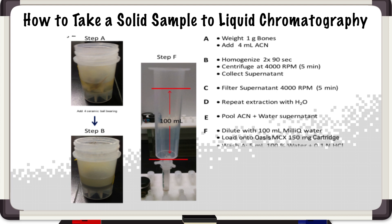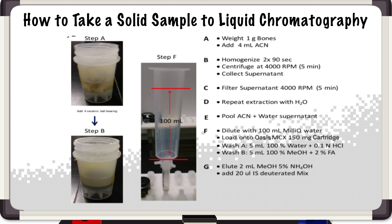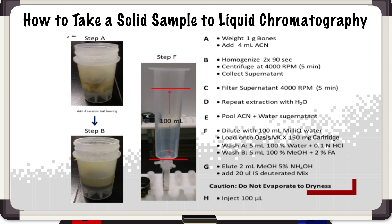Then we perform two wash steps. The first is using 5 mils of 100% water and 0.1 normal hydrochloric acid, and then we do a wash step using 5 mils of 100% methanol with 2% formic acid. We elute using 2 mils of methanol and 5% ammonium hydroxide. To that we add 20 microliters of a deuterated internal standard, and because we're using multi-dimensional liquid chromatography, there is no need to evaporate and reconstitute our sample. We can take it directly to the instrument.